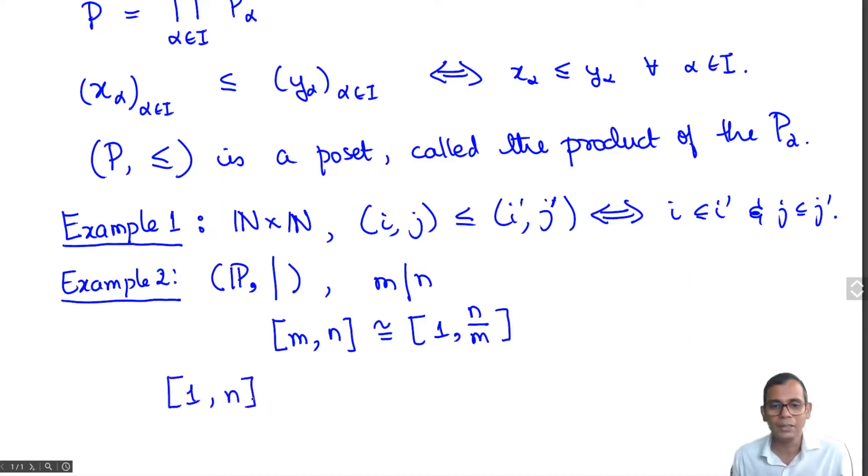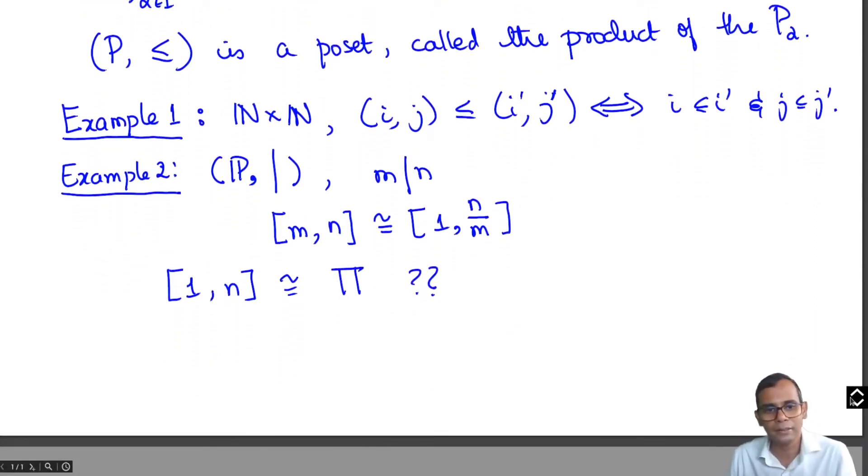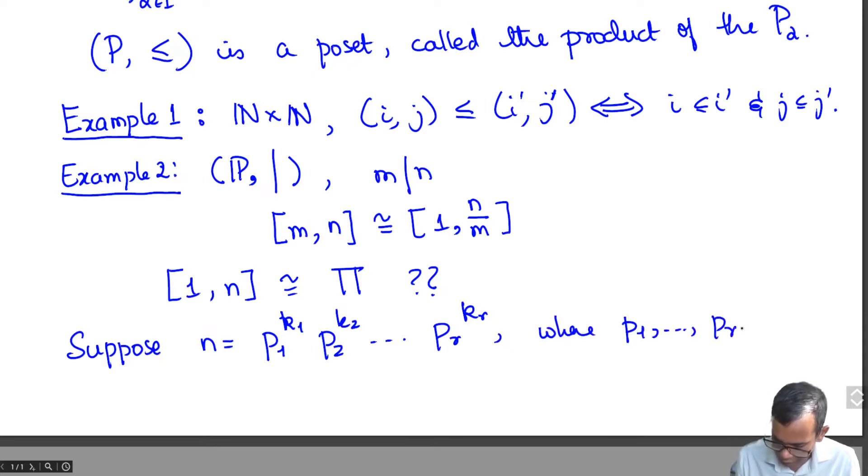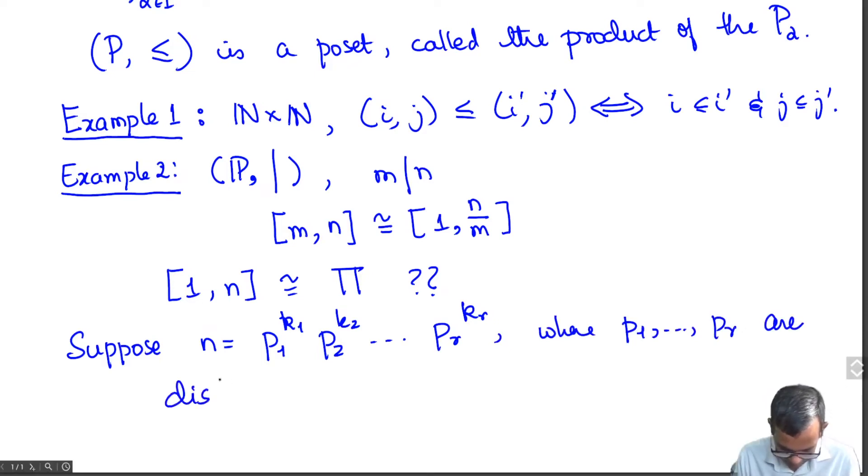In order to understand this interval it's enough to understand [1,n]. So what is this? Can we write this as a product? It turns out that this poset's structure reflects the prime factorization of n. Suppose we have n = p₁^{k₁} p₂^{k₂} ... p_r^{k_r} where p₁, p₂, ..., p_r are distinct primes and k₁, k₂, ..., k_r are positive integers.